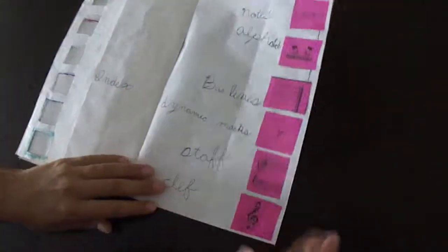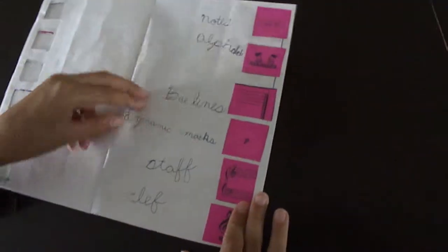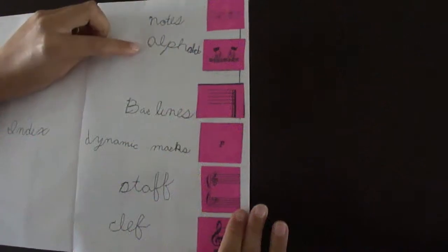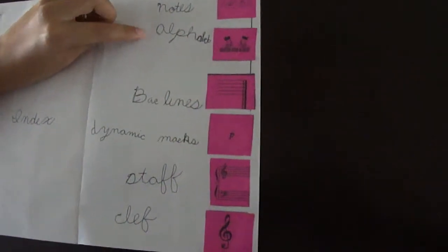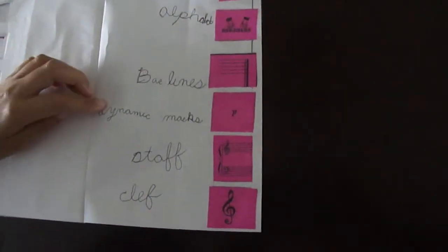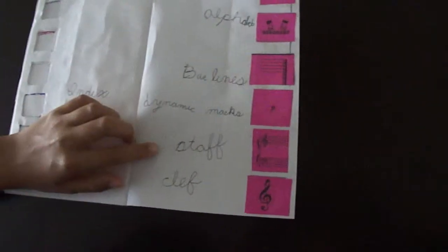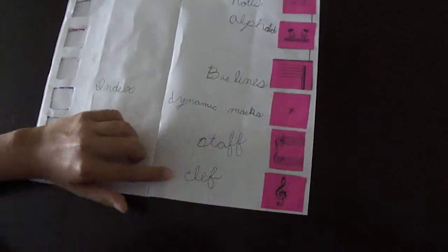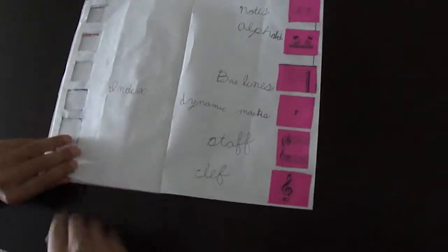Skipping back to the index, you can see I wrote about notes, the musical alphabet, bar lines, dynamic marks, the staff, and clef.